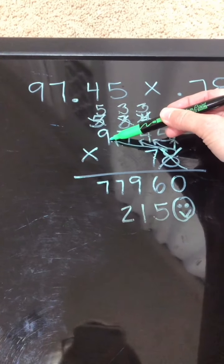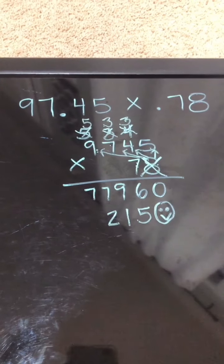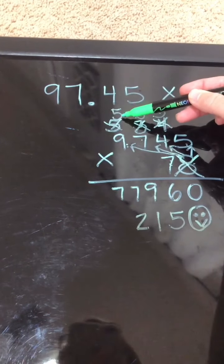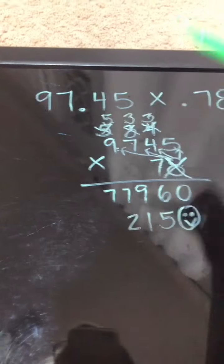7 times 9 gives me 63, 64, 65, 66, 67, 68.